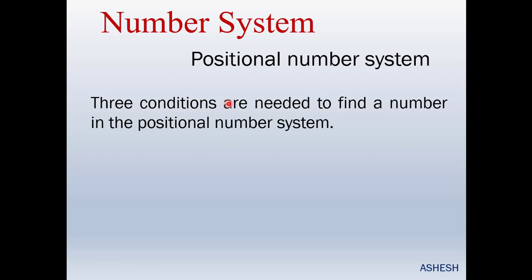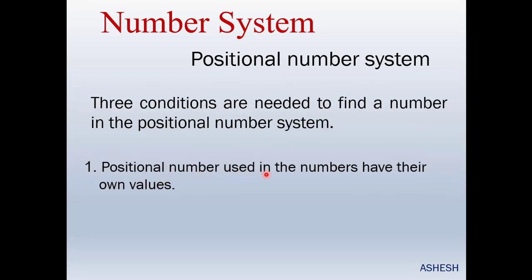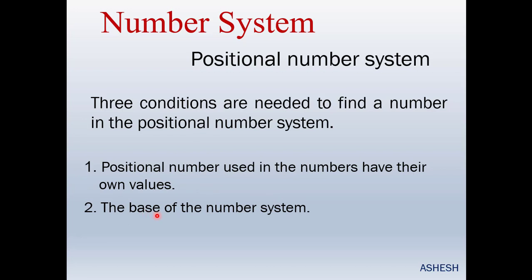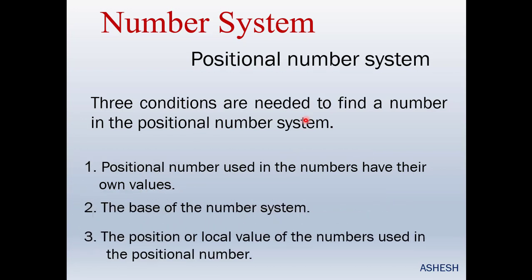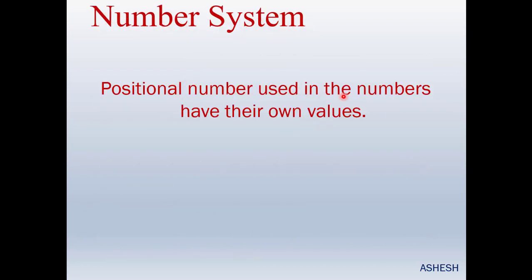Three conditions are needed to find a number in the positional number system. One: the digits used in the number system have their own values. Two: the base of the number system. Three: the positional or local value of the digits used in the positional number system.